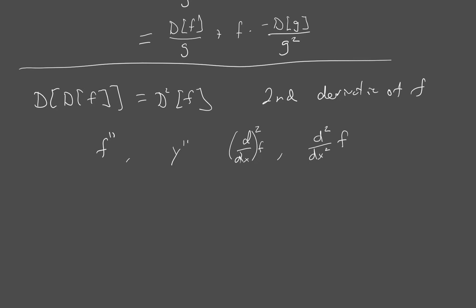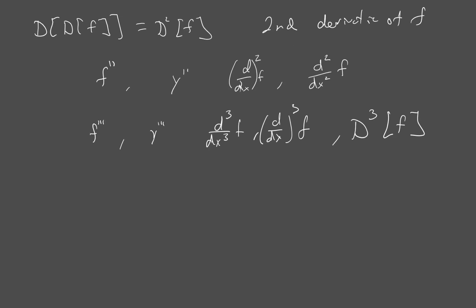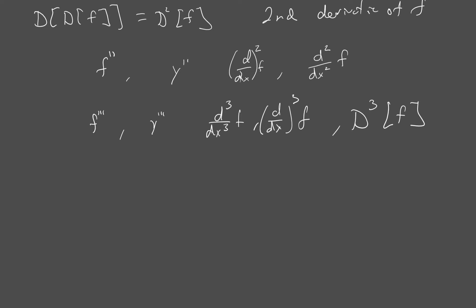This all generalizes. Three tick marks is the third derivative, and you get d cubed over dx cubed applied to f, or d dx cubed applied to f, or d cubed f. For higher derivatives, we don't keep putting more tick marks. Instead, f with a superscript n in parentheses is the nth derivative. You can also write y superscript n, or take the nth power of d dx applied to f, which is d to the n over dx to the n applied to f, or use the big D notation: D to the n of f.